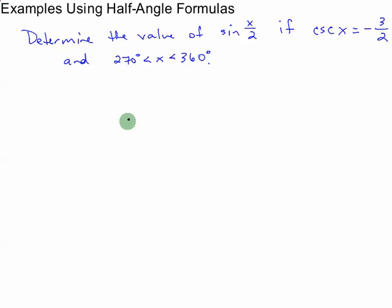Here's another slightly different example. I want to know the value of sine of x over 2. And I don't know what x is if the cosecant of the angle x is negative 3 halves and x is between 270 degrees and 360 degrees. So the first thing I'll do is I'll draw a picture of what I know about each angle. So I've got angle x and I've got angle x over 2. It's very important to distinguish here.